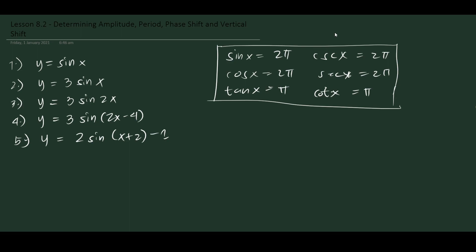In this video, it is important to determine and memorize the normal periods of the basic trigonometric functions. For y = sin x, the normal period is 2π — same for cosecant x. For cosine x it is also 2π, as is secant x. Tangent x equals π, and cotangent x is also π.